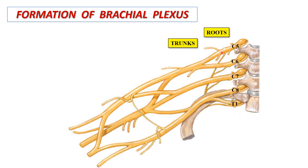The ventral rami of C5 and C6 unite to form the upper trunk. The ventral ramus of C7 continues as the middle trunk, whereas the ventral rami of C8 and T1 unite to form the lower trunk. So there are three trunks of the brachial plexus.